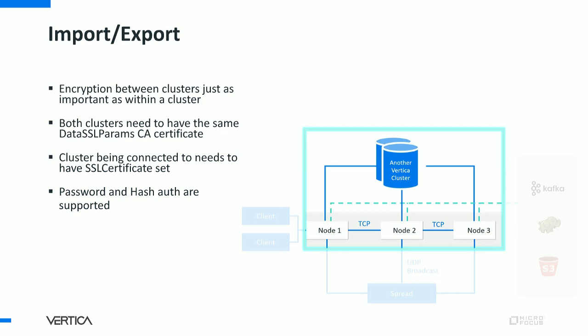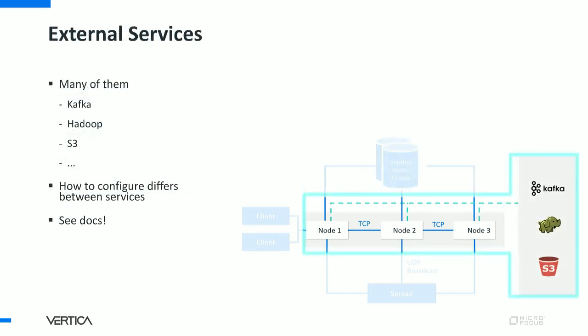Import-export is a good way to move data between clusters. For instance, if you have an on-premises cluster and you're looking to move to AWS, import-export is a great way to move your data — but that means data is going over the open internet, where an attacker could sniff network traffic and pull out credit card numbers or other sensitive data. We also connect to a lot of external services: Kafka, Hadoop, S3, and Voltage Secure Data. Because each service deals with authentication differently, how to configure authentication to them differs — so check the docs.